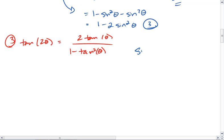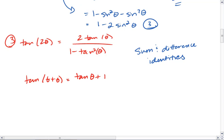Again, to prove this, we're going to use our sum and difference identities. So we're going to split tan of 2 theta up into theta plus theta, which is going to equal tan of theta plus tan of theta all over 1 minus tan theta times tan theta. We simplify and we get 2 tan theta all over 1 minus tan squared theta.